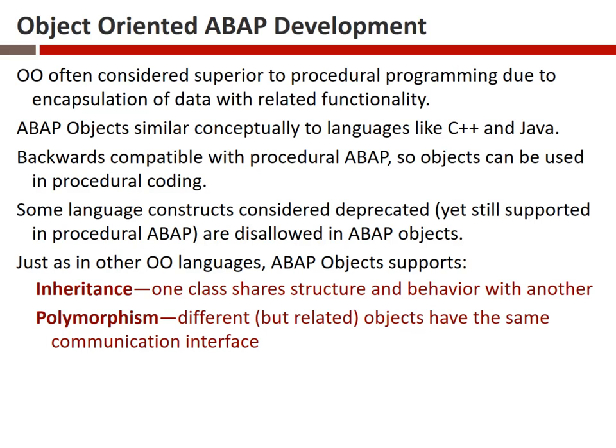A real-world example of polymorphism: you rent a car you've never driven before, get in the driver's seat, and you already know how to operate it — how the steering wheel, brake, and accelerator work — because every car works on the same principle. You communicate with the car in the same way. You could even drive things that are car-like, like a tractor or steam roller, because the interface to operate that equipment is fundamentally the same even though they're different objects.